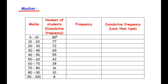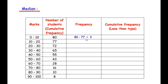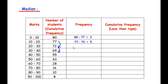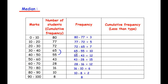To find the actual frequency for 0 to 10, we subtract 77 from 80 to get 3. Then 77 minus 72 gives 5, 72 minus 65 gives 7, 65 minus 55 gives 10, 55 minus 43 gives 12, 43 minus 28 gives 15, 28 minus 16 gives 12, 16 minus 10 gives 6, 10 minus 8 gives 2, and the last term 8 is kept as is since there is no further value to subtract.